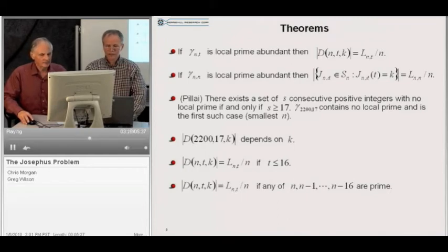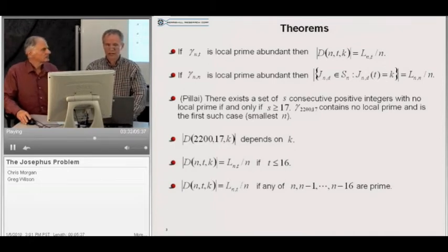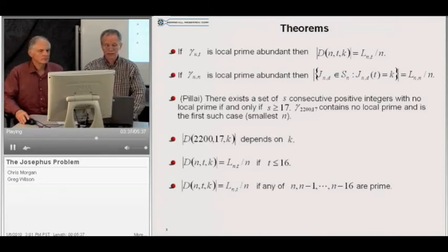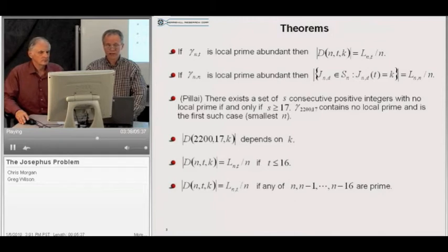As a result of Pillay's theorem, and as well as our own theorem, we have two corollaries listed here. The first is that the number of elements in d n t k is given by our simple enumeration L n t over n, and that happens provided t is less than or equal to 16. The same conclusion results under another hypothesis, namely that any one of n down to n minus 16 is a prime number.